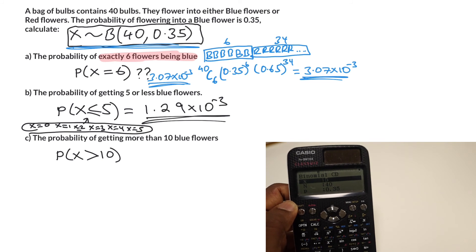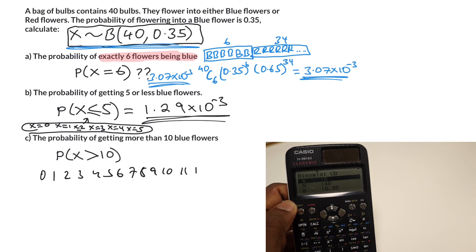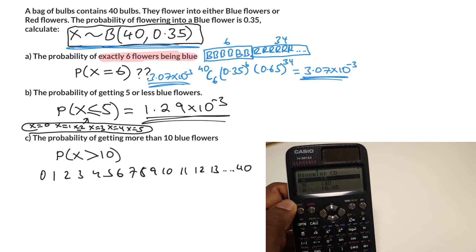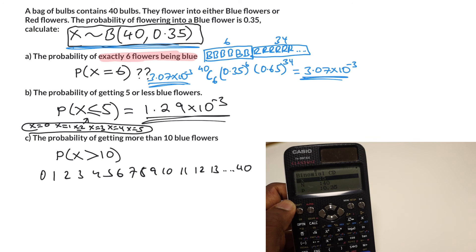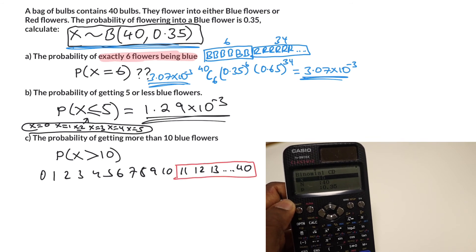We want the probability of 10 or more, so 0, 1, 2, 3, 4, 5, 6, 7, 8, 9, 10, 11, 12, 13, all the way up to 40. I've put out all our possibilities here, and what we're looking for is more than 10, so that means 11 or more.